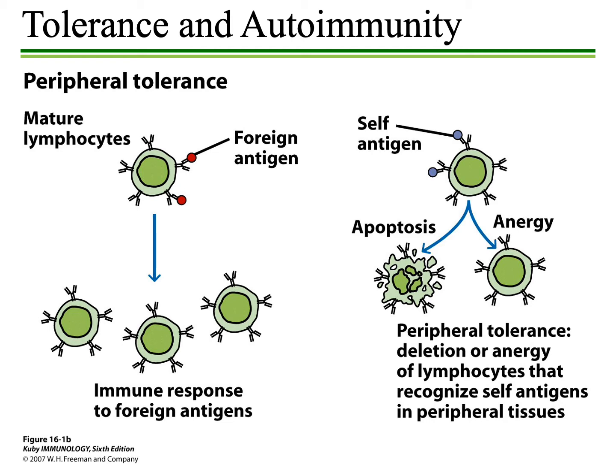The central tolerance mechanism is actually extremely effective, however it is not a perfect mechanism. Sometimes self-reactive lymphocytes can make it through to the secondary lymphoid tissues, and in this case peripheral tolerance would be a backup mechanism to prevent interaction with self-antigens. On the left-hand side of the slide, you see a normal response to a foreign antigen — lymphocytes interacting with antigen to eventually lead to the production of more lymphocytes with a response to that specific antigen.